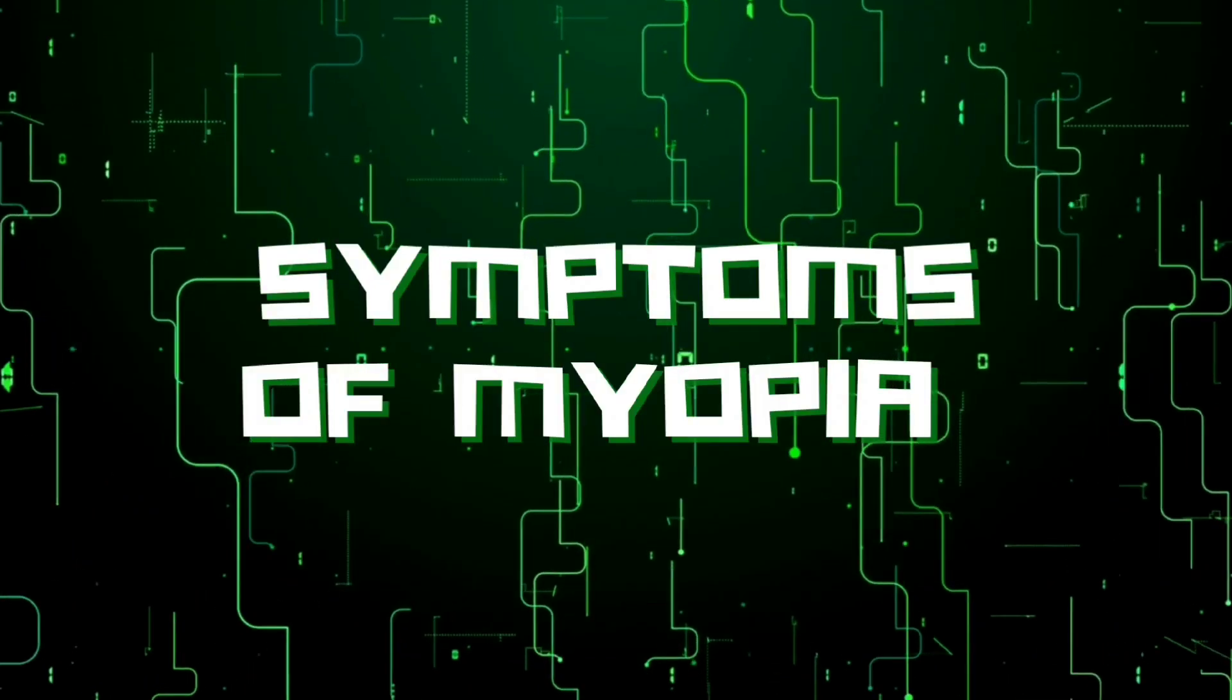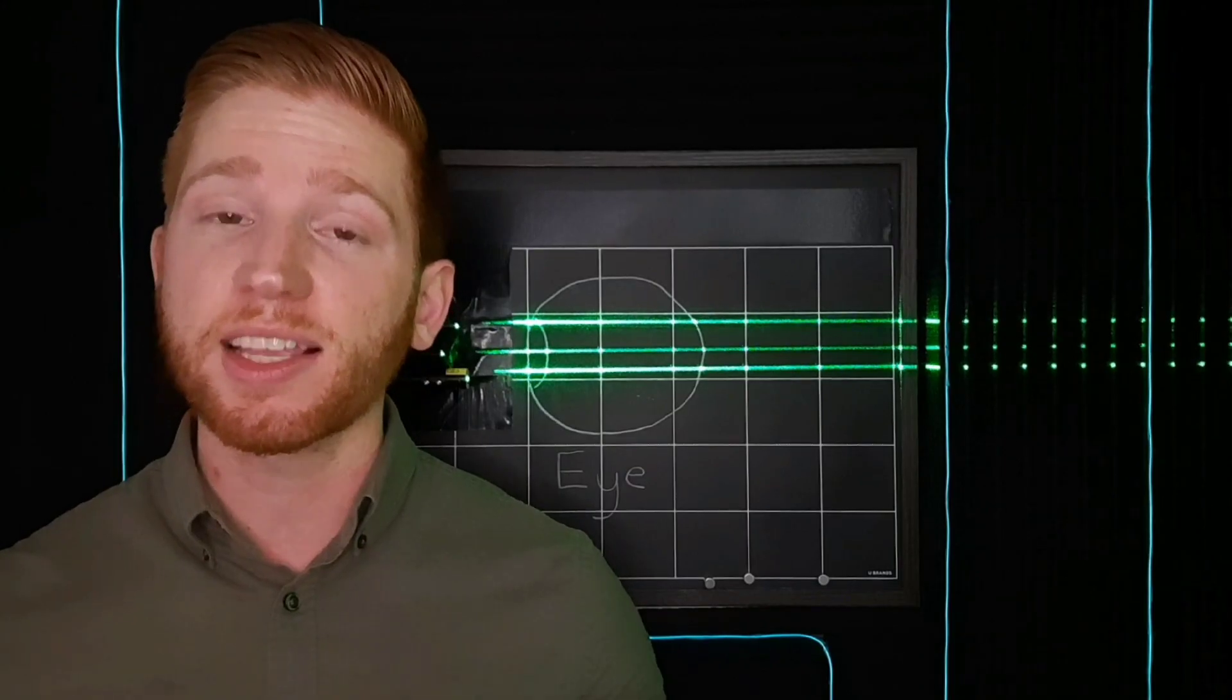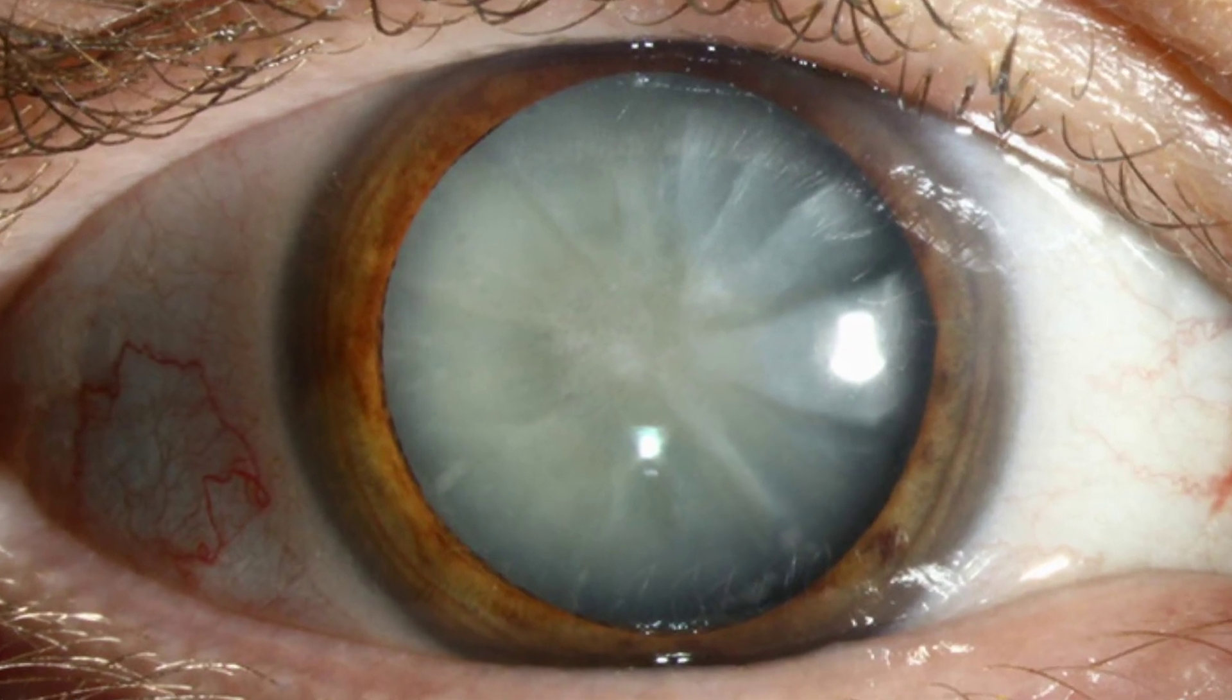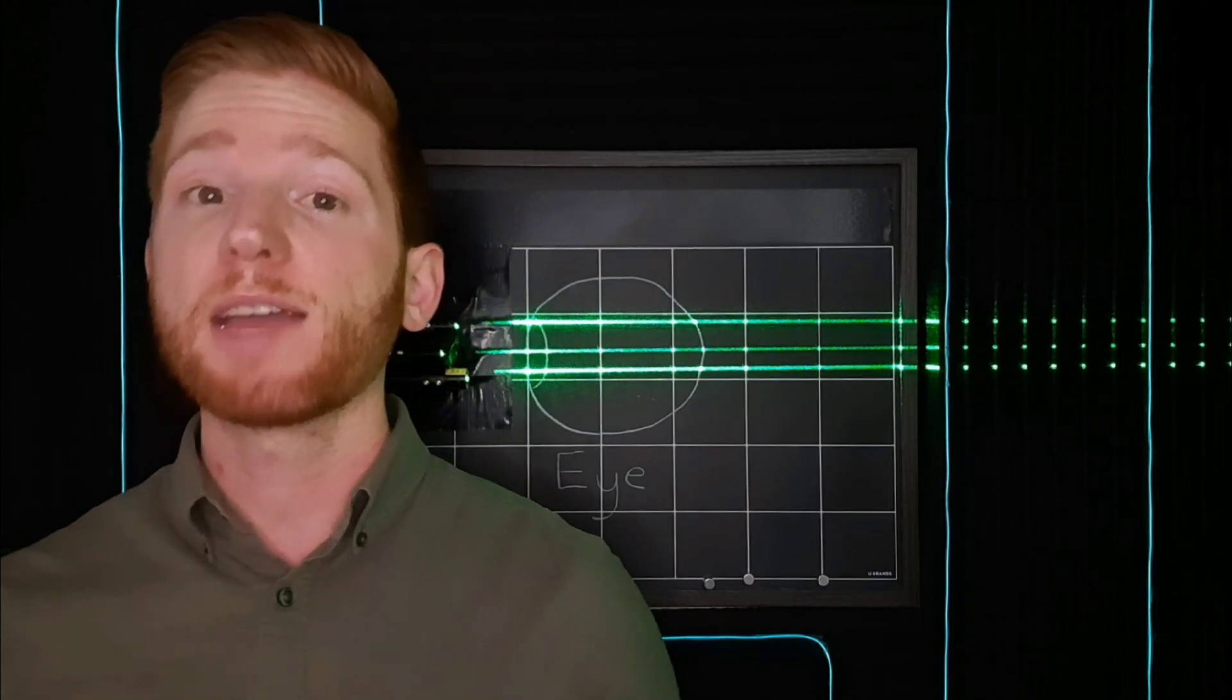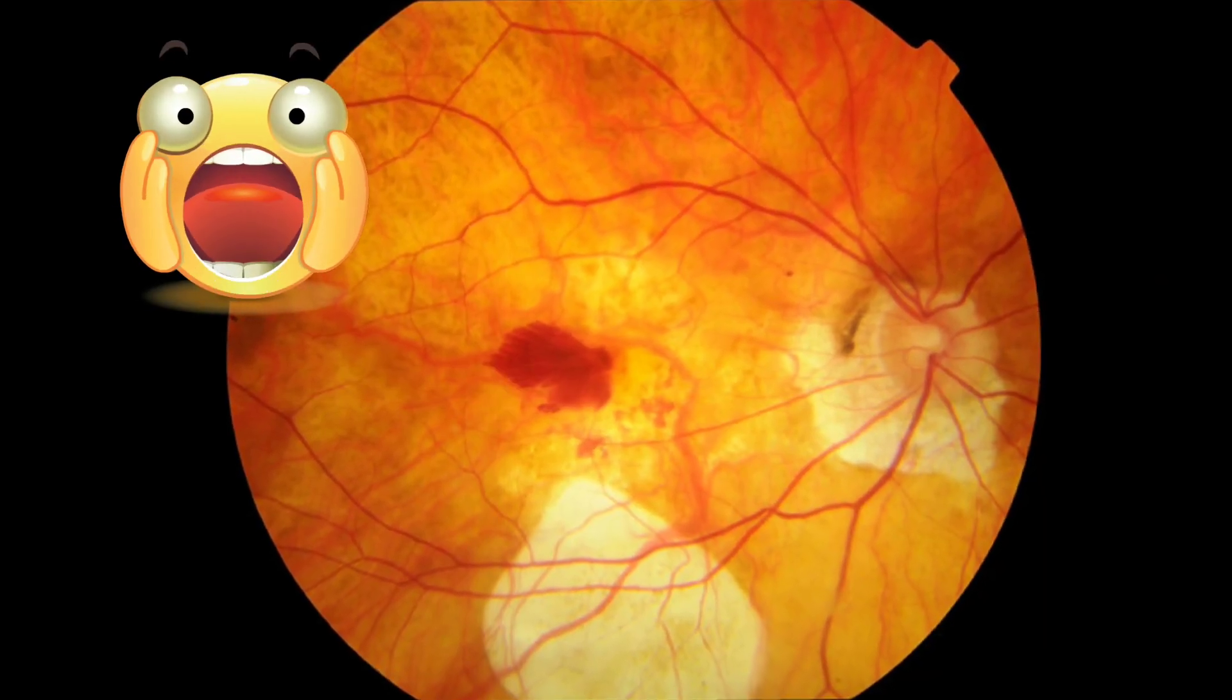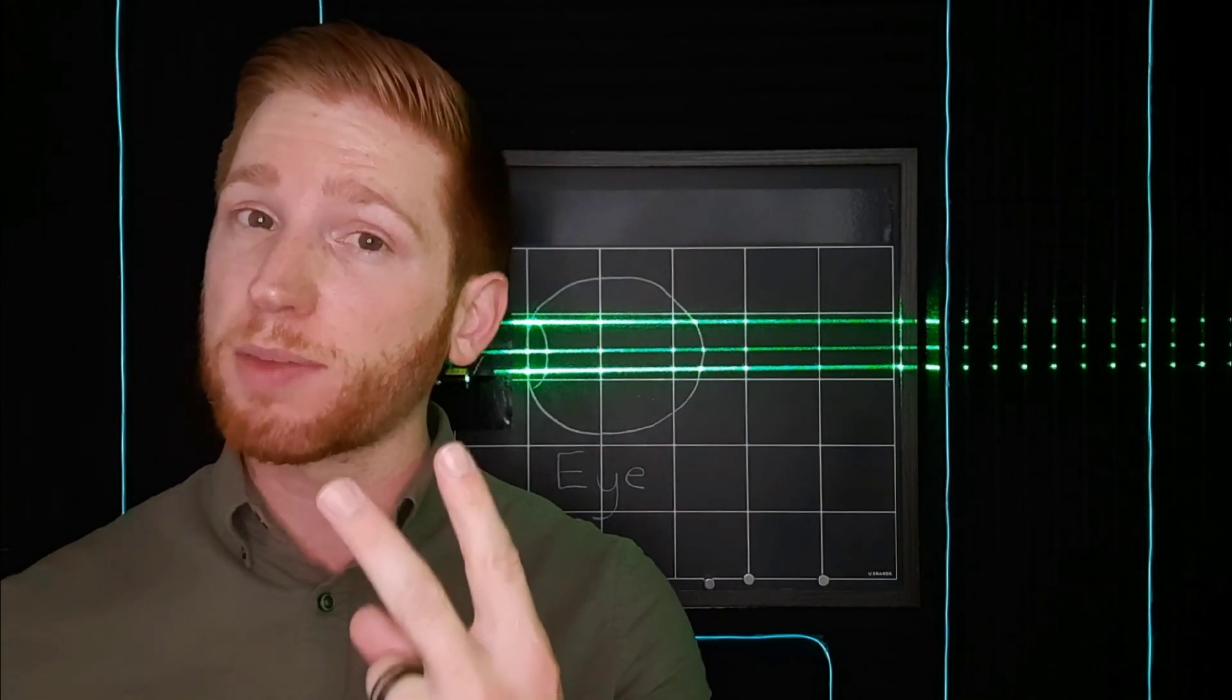In addition to things further away being blurry, symptoms of myopia include headaches, eye strain, and squinting. Having myopia also increases your risk of other eye conditions like glaucoma and cataracts. In rare cases, a progressive type called degenerative myopia can be really serious and lead to legal blindness. This scary kind of nearsightedness affects about 2% of the population.